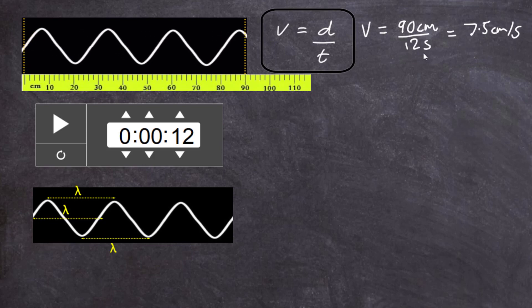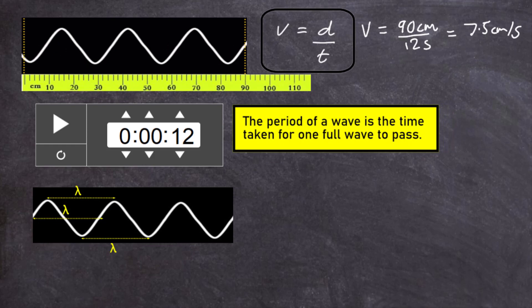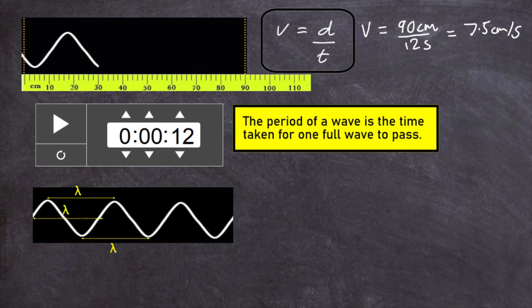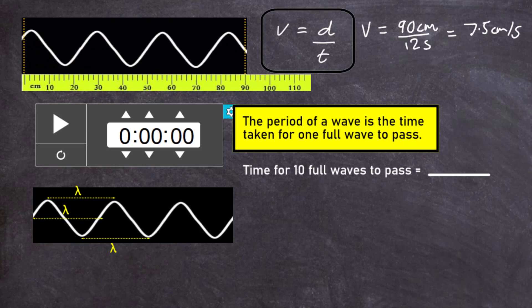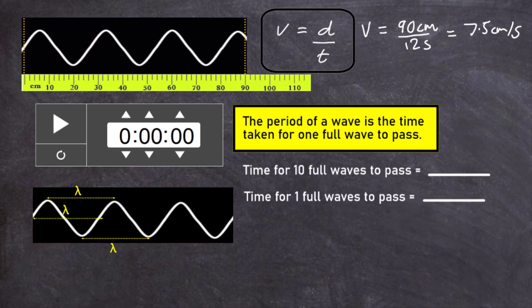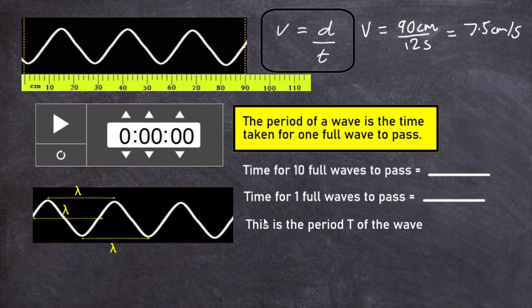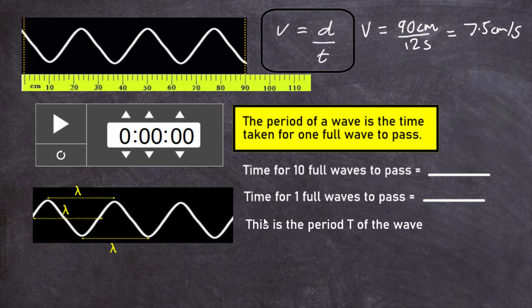Our next calculation is to find the period of the wave — the time it takes for a full wave to pass, meaning from one crest passing to the next crest passing. The period is given the symbol T. A good way to measure it is to time 10 full waves passing using the stop clock, then divide by 10 to find the time for one full wave — which is the period.